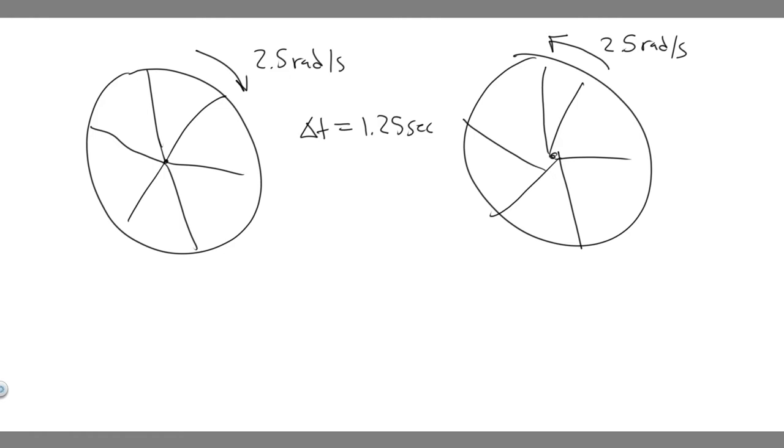Calculate A, the change in the tire's angular velocity, omega, and then B, the tire's average angular acceleration, alpha.